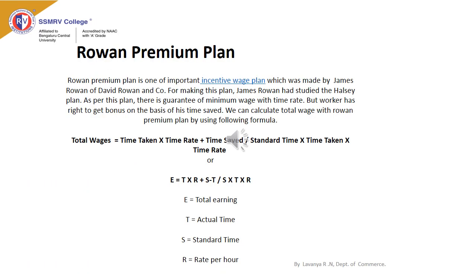We will discuss about the Rowan Premium Plan. It is introduced by David Rowan and is one of the important incentive wage plans. As per this plan, minimum wages are guaranteed to all workers, and workers are entitled to get a bonus if they save time. Wages are calculated under the Rowan Plan using the following formula: Total wages equals time taken by the worker into rate per hour, plus time saved divided by standard time, into time taken into time rate.